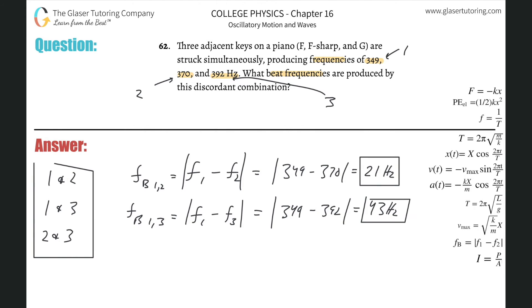Last but not least, we do the beat frequency between two and three. That's equal to the absolute value of F2 minus F3. And that's simply going to be 370 minus 392. And that looks like it's simply going to be 22.